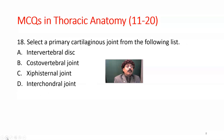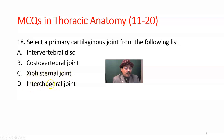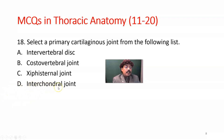Question number 18. Select a primary cartilaginous joint from the following list: intervertebral disc, disc between the bodies of two vertebrae, costovertebral joint. The intervertebral disc is a secondary cartilaginous joint, not primary. The costovertebral joint is a synovial joint. Most intercostal joints are synovial, except the joint between the 10th rib, 10th costal cartilage and 9th costal cartilage, which is fibrous. The intercostal joint between the 9th and 10th costal cartilages is connected by fibrous tissue; otherwise they are plain synovial joints.